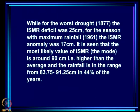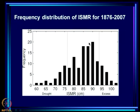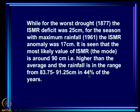For the worst drought in 1877, the ISMR deficit was as large as 25 centimeters for the season, while for the maximum rainfall year of 1961, the ISMR anomaly was 17 centimeters. The most likely value of ISMR, the mode, is around 90 centimeters — almost 20 percent of years — which is higher than the average of 85. Rainfall in the range 83.75 to 91.25 centimeters occurs in 44 percent of years, so a large number of years have rainfall rather close to normal.